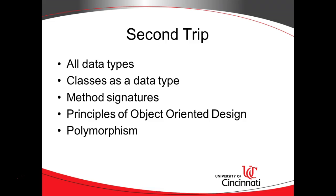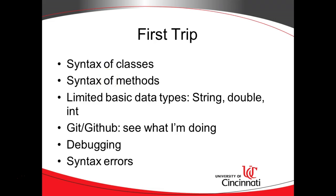In our second trip we're also going to take a deeper look at method signatures — explaining why the word 'public' is there and what other alternatives exist. We'll talk about implicit and explicit parameters, getting much deeper into the construction of a method. Then we're going to talk about principles of object-oriented design: encapsulation, inheritance, polymorphism, and the like — things that are going to be good interview questions. The first trip is very important because it's what's going to make us productive and help us use our time wisely this semester.